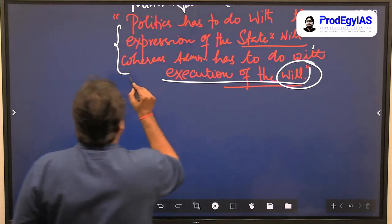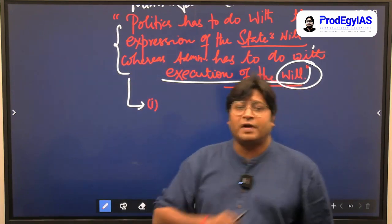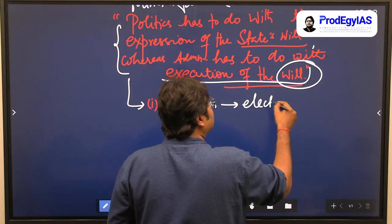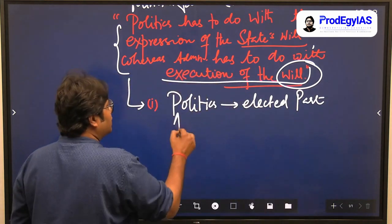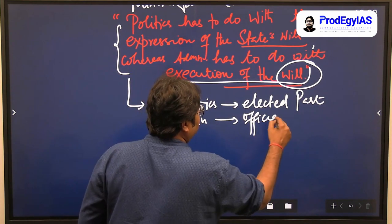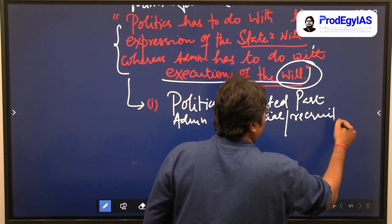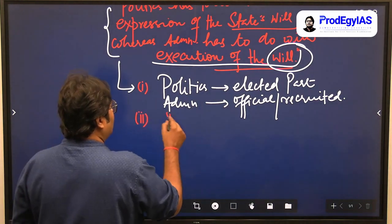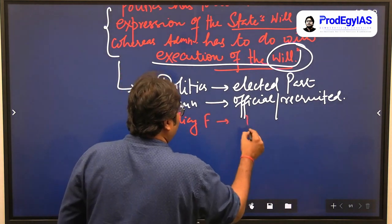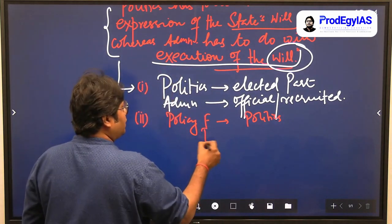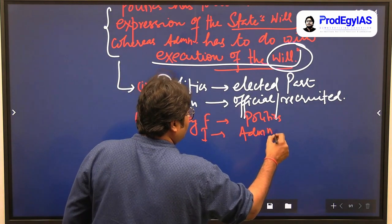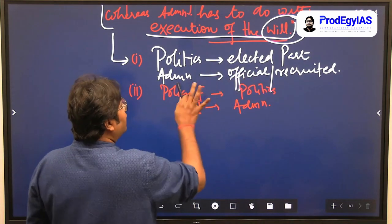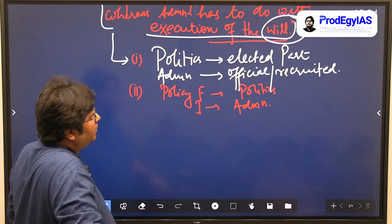To support his idea, Goodnow clearly specifies: politics is the elected part, administration is the official part. Policy formulation is politics; implementation is administration. Wherever elected representatives are, that is politics. Wherever officials who are recruited are, that is administration. Policy formulation belongs to politics; implementation belongs to administration.